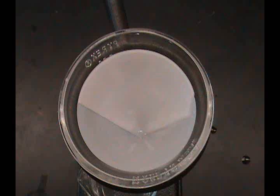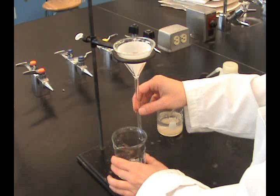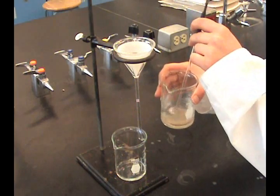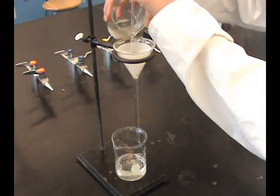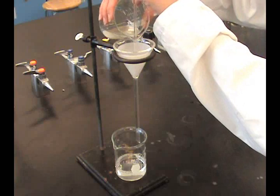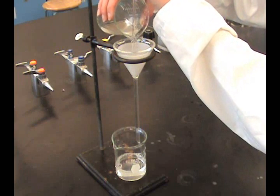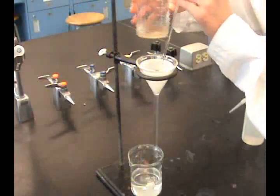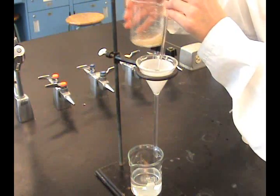Make sure the tip of the funnel is touching the side of the receiving vessel for proper flow. Swirl the solution to suspend the solid and liquid. Pour using a glass rod to guide the solution, keeping the level of solution no more than three quarters full in the filter paper.